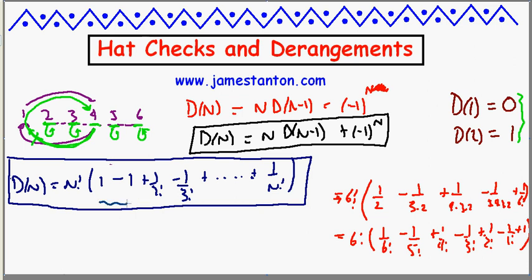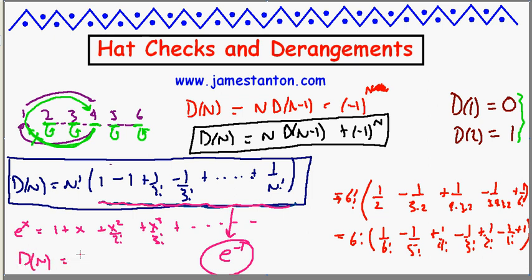Well I can't resist saying right now for those that know calculus this is very very familiar. We know that e to the x is 1 plus x plus x squared over 2 factorial plus x cubed over 3 factorial all the way up. So this very much looks like the Taylor series for e to the x at x equals negative 1. In fact, as n goes to infinity this wants to be the Taylor series for e at negative 1. So basically as n becomes large the number of derangements wants to become n factorial over e.